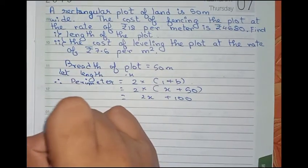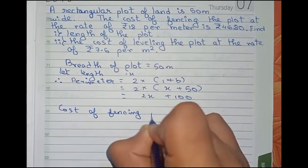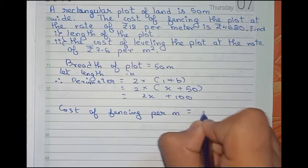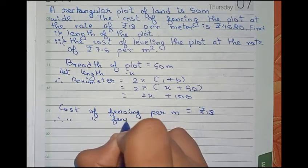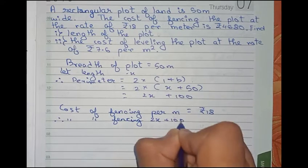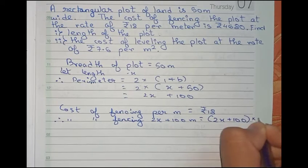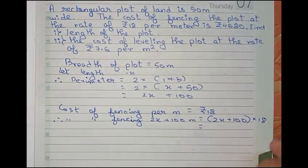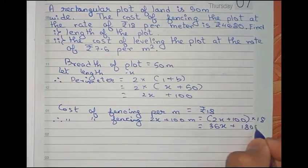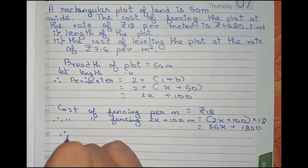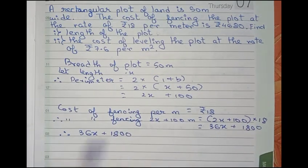Now cost of fencing per meter equals rupees 18. Therefore, cost of fencing 2x plus 100 meters equals 2x plus 100 times 18, which equals 36x plus 1800. So 36x plus 1800 is the cost of fencing the plot.